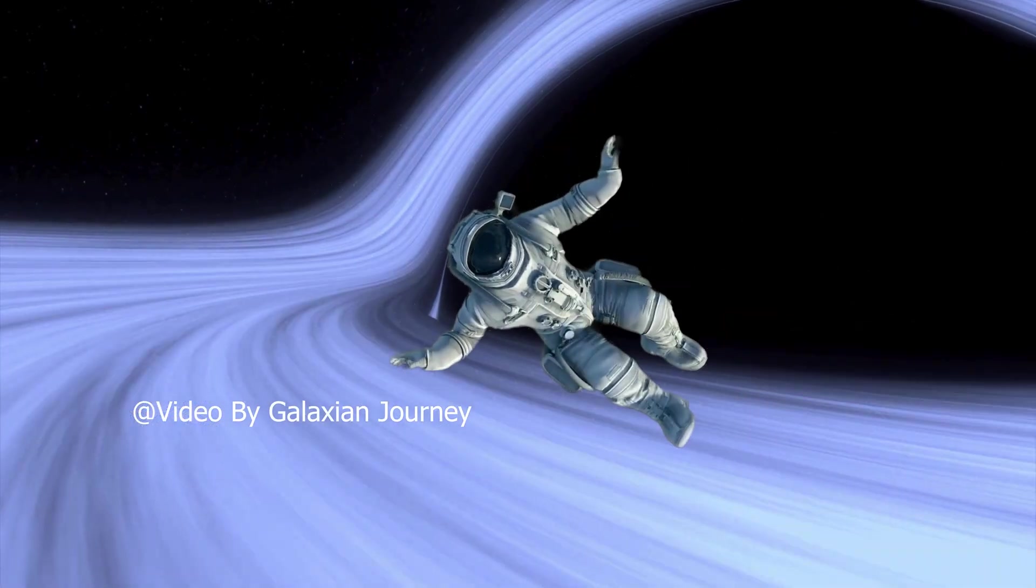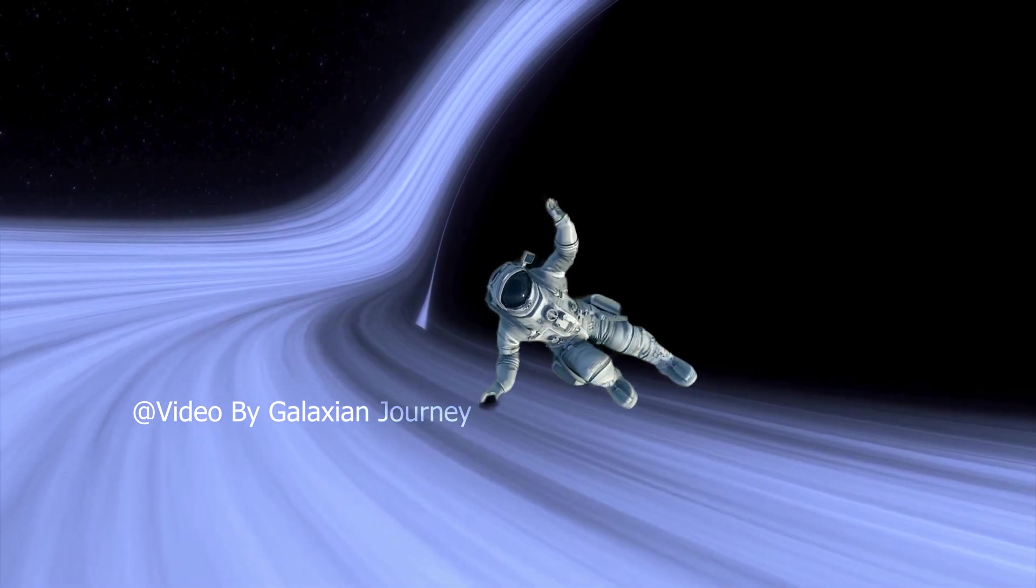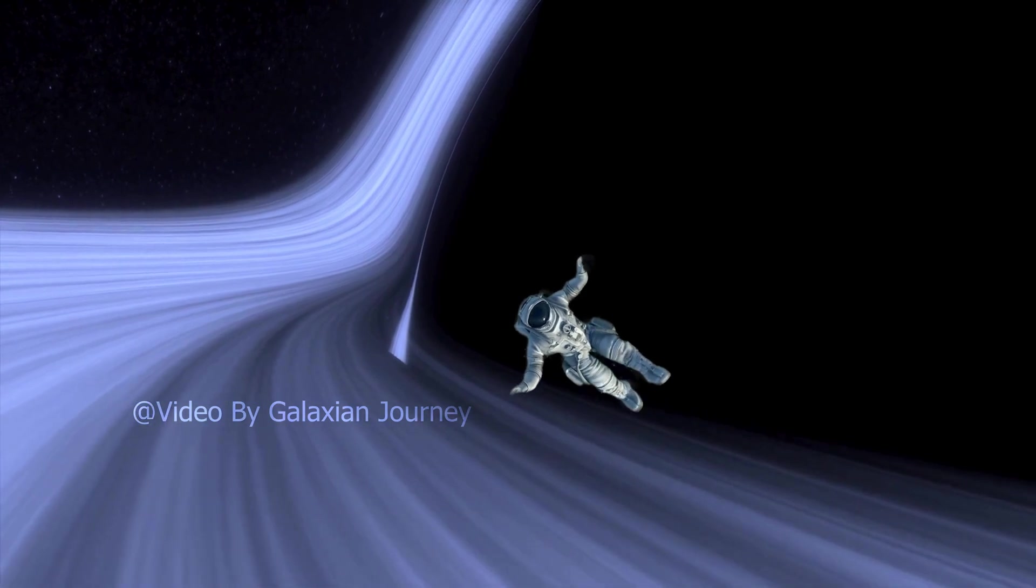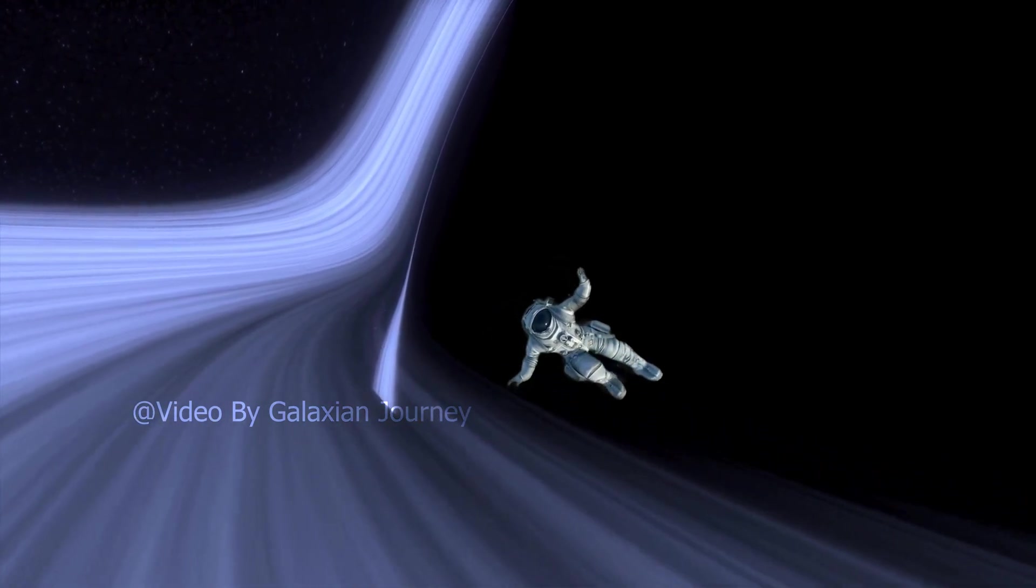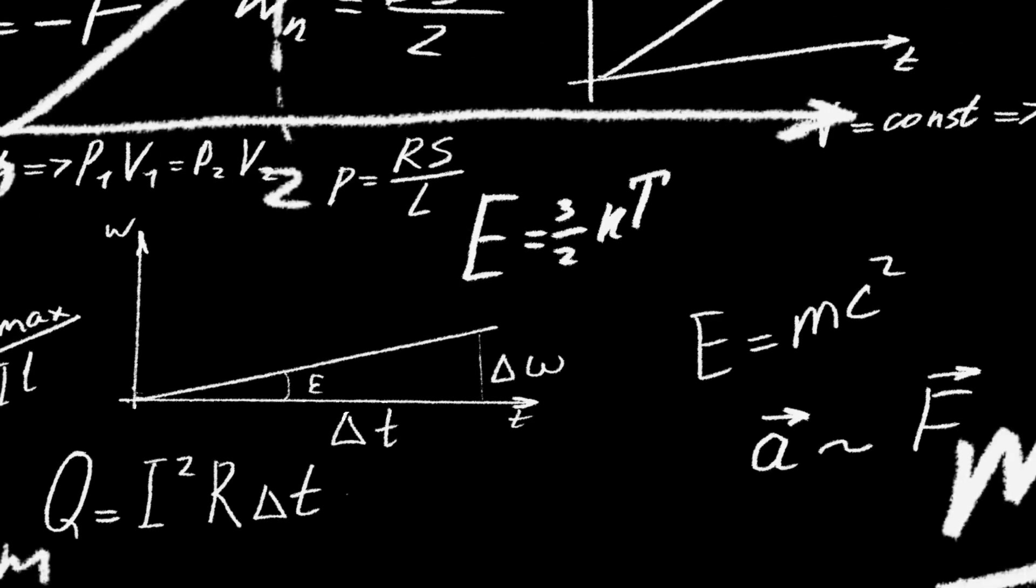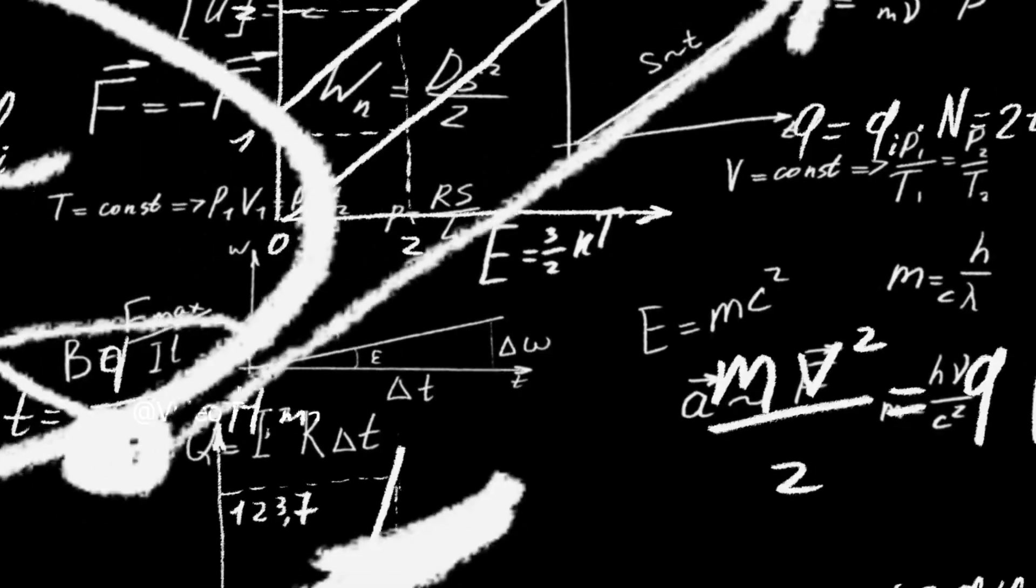But what would happen to an object after it crosses the event horizon? Well, according to general relativity, they would continue to fall towards the center of the black hole where the gravity becomes infinite and the spacetime becomes singular. This means that the laws of physics as we know them would break down and we don't know what would happen next.